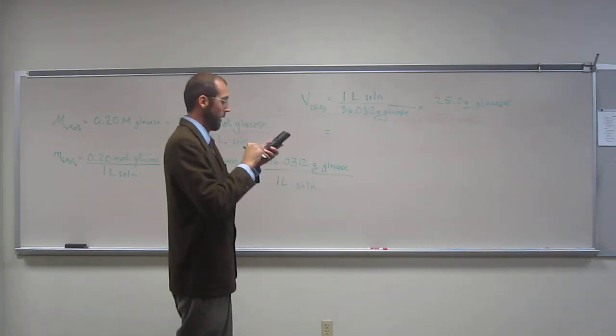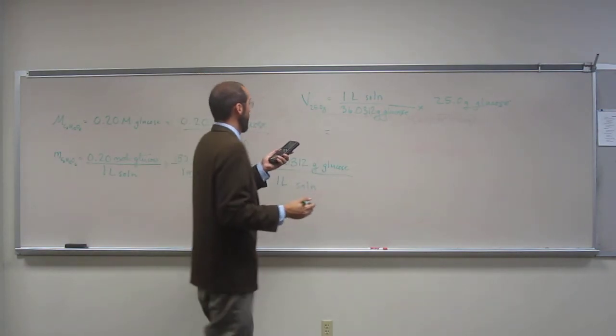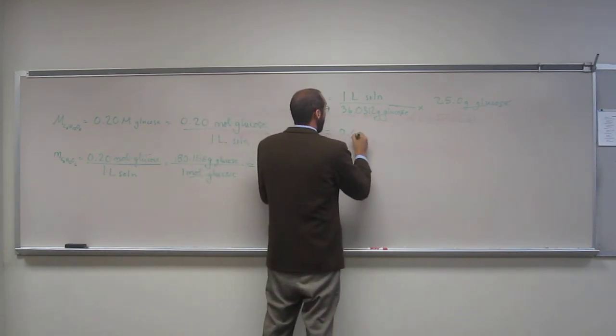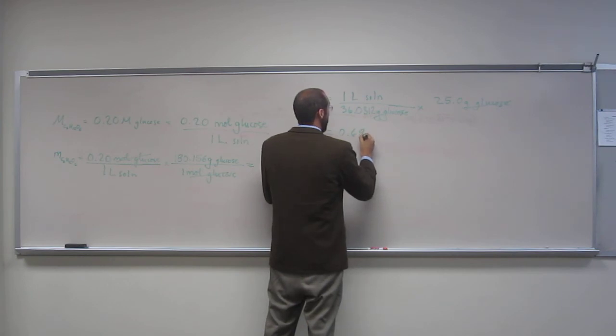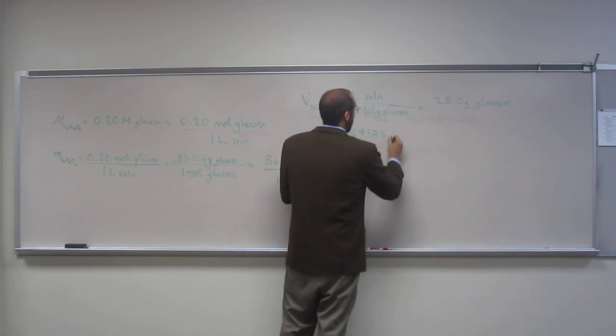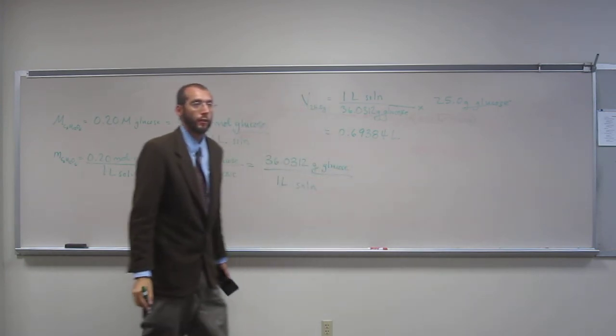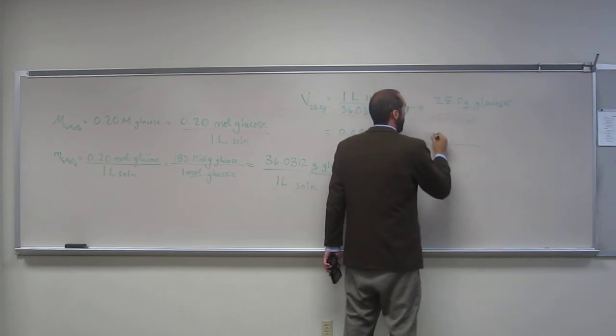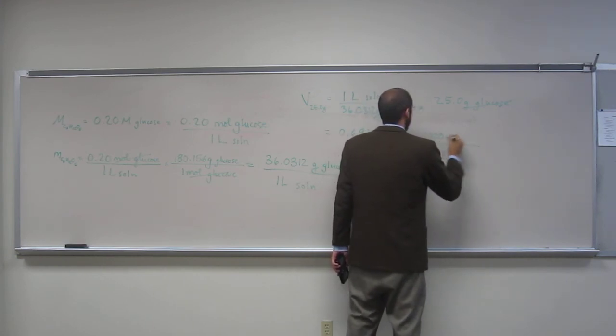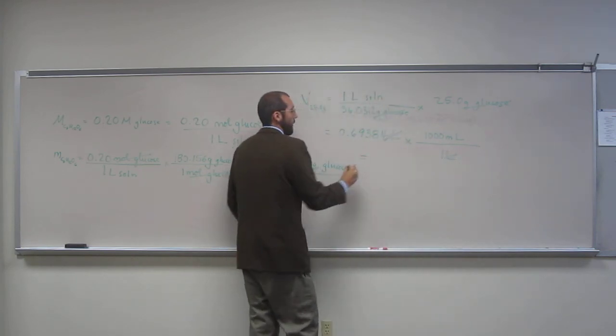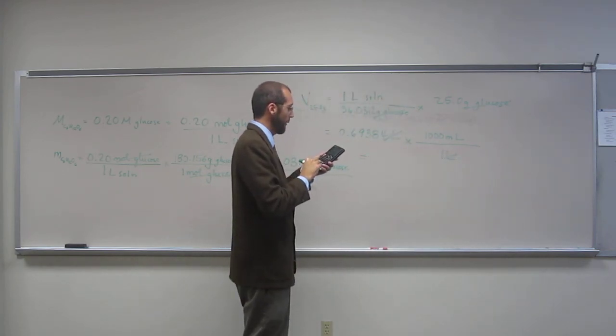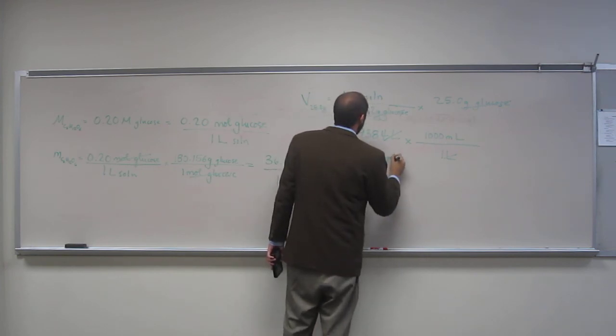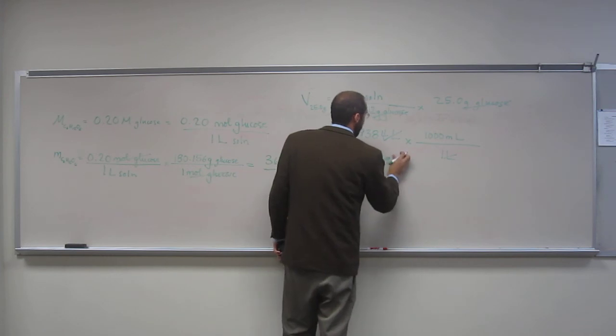So just take 25 divided by 36.03, and I get 0.693884, but that's liters, right? So we're going to cancel my units. So 1 liter for every 1,000 mils. Cancel, cancel. So just take that, multiply it by 1,000, and of course you get 694.